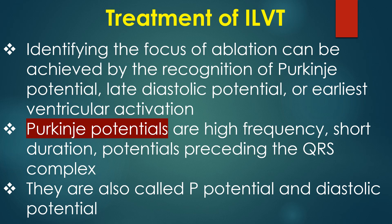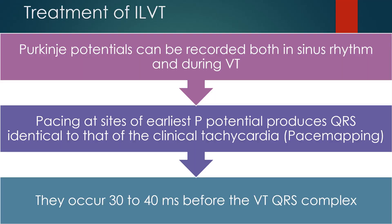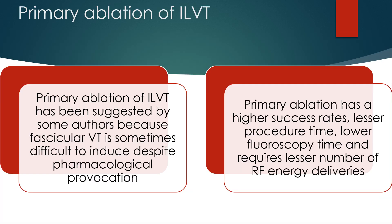Purkinje potentials are high-frequency, short-duration potentials preceding the QRS complex. They are also called P potentials and diastolic potentials, and can be recorded both in sinus rhythm and during VT. Pacing at sites of earliest P potential produces QRS identical to that of clinical tachycardia. They occur 30 to 40 ms before the VT QRS complex. Primary ablation of ILVT has been suggested by some authors because fascicular VT is sometimes difficult to induce despite pharmacological provocation. Primary ablation has a higher success rate, lesser procedure time, lower fluoroscopy time, and requires fewer RF energy deliveries.